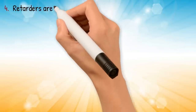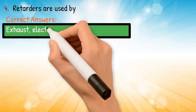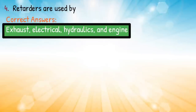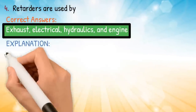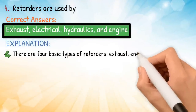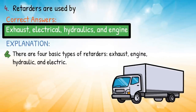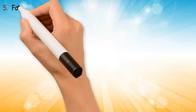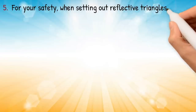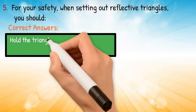Question four: retarders are used by — correct answer: exhaust, electrical, hydraulics, and engine. Explanation: there are four basic types of retarders — exhaust, engine, hydraulics, and electric. Question five: for your safety when setting out reflective triangles, you should — correct answer: hold the triangles between your body and oncoming traffic.